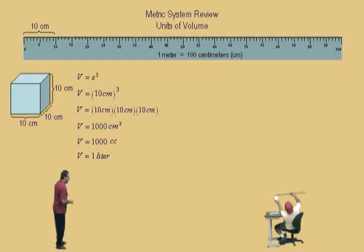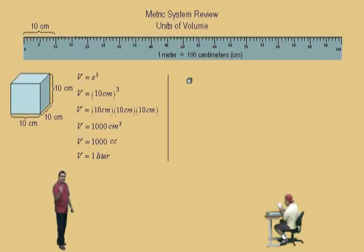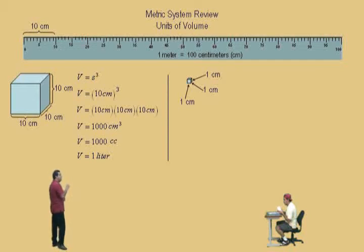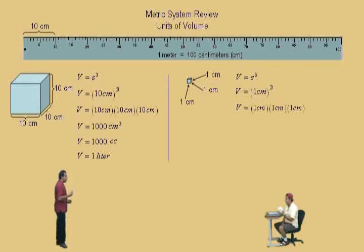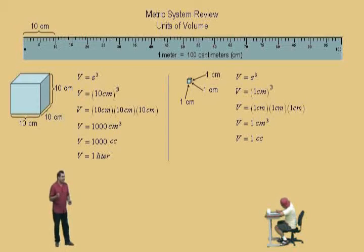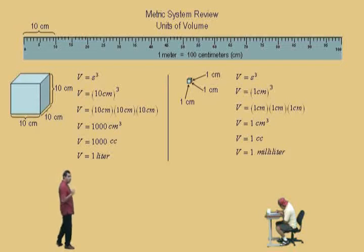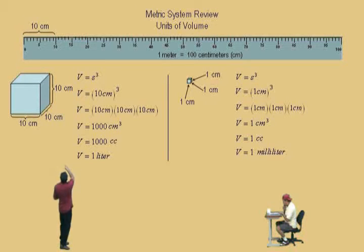Charlie, show me your one liter cube. You can look at the side length as being one decimeter, or the side length is ten centimeters — however you want to write that. Now let's look at a one centimeter side length cube, which means you have a little cube where each side length is one centimeter. That's a very small volume, right? Charlie, how big is your one centimeter cubed? It's very tiny. Volume is side length cubed. In this case it's one centimeter, so we cube one centimeter and we get one centimeter cubed, which is actually one cc. And one cc is actually equal to one milliliter.